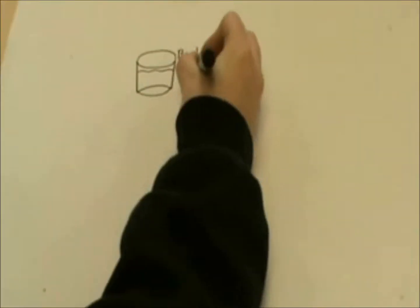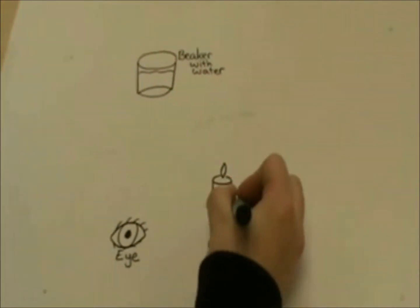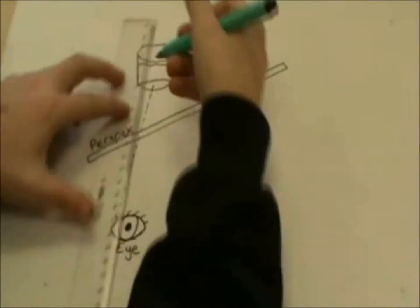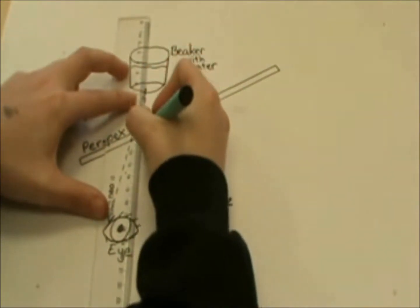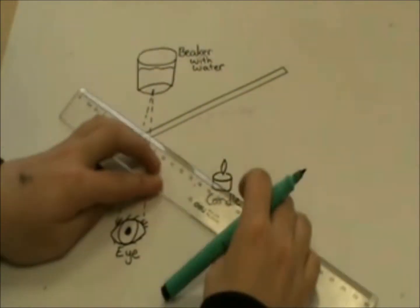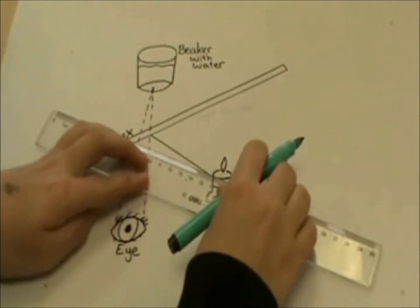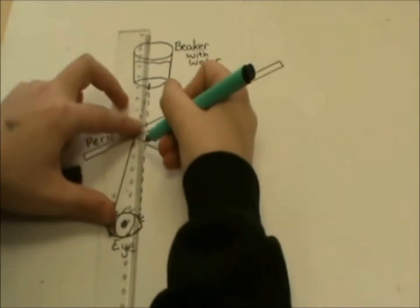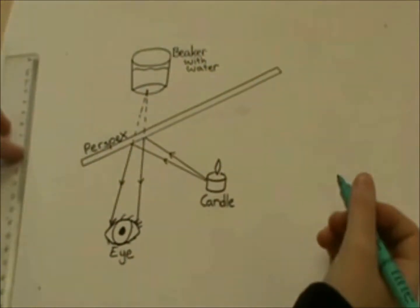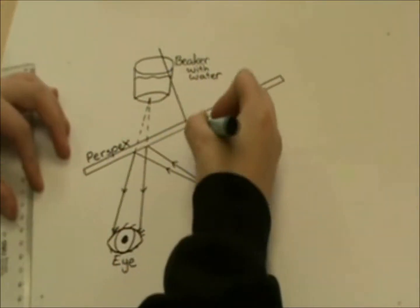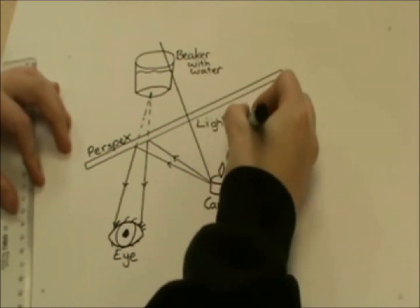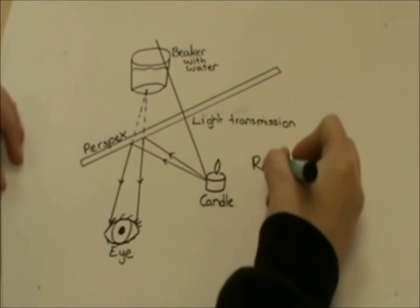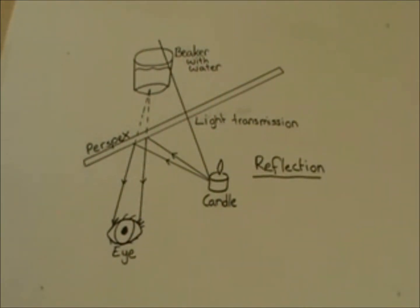Although perspex is mostly transparent, it reflects some of the light that hits it. Normally the light that transmits is a lot brighter, so you can't see the reflection. If you use something bright like a flashlight or candle in front of the perspex, and a dark room behind, the reflection can appear. This means that the translucent reflection looks like it is coming from the other side of the glass, whether it is a candle or a ghostly person.